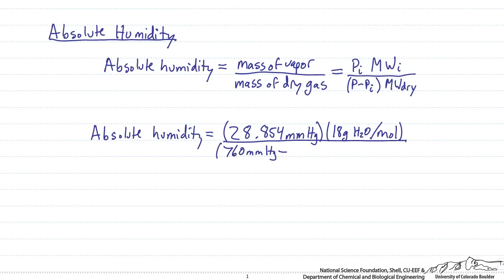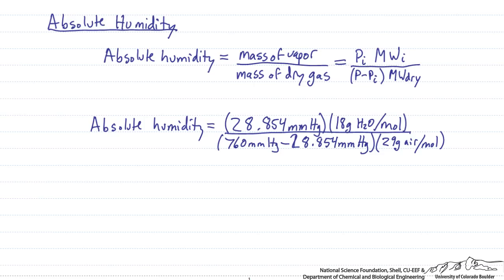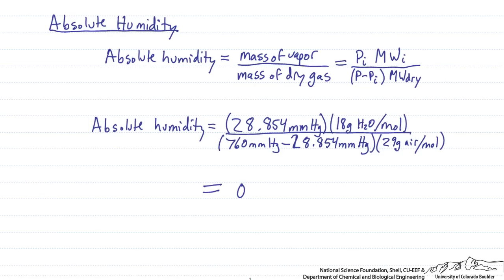We subtract from that the partial pressure due to the water vapor, times the average molecular weight of air, which is 29 grams of air per mole. And this is going to give us 0.024 grams of water per gram of air.